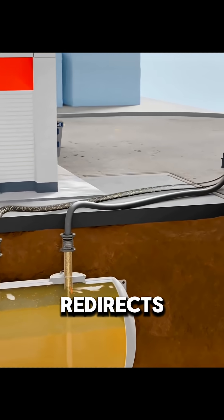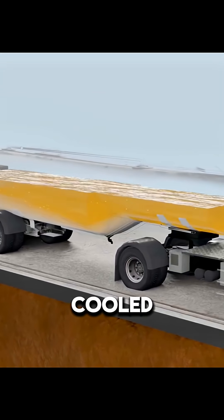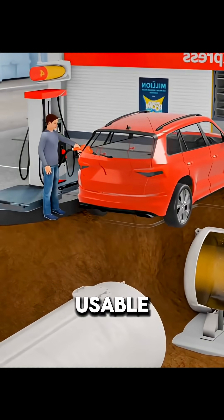At the same time, another valve redirects the vapors back into the truck's tank. There, the vapors are cooled, condensed, and turned back into usable fuel.